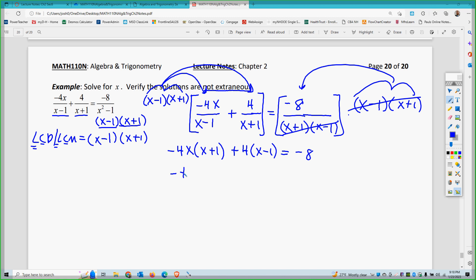We have negative 4x squared minus 4x plus 4x minus 4 equals negative 8. If I simplify that, I get negative 4x squared minus 4 equals negative 8. This is clearly an isolation problem because I only have one power of x, so I don't need to factor here.